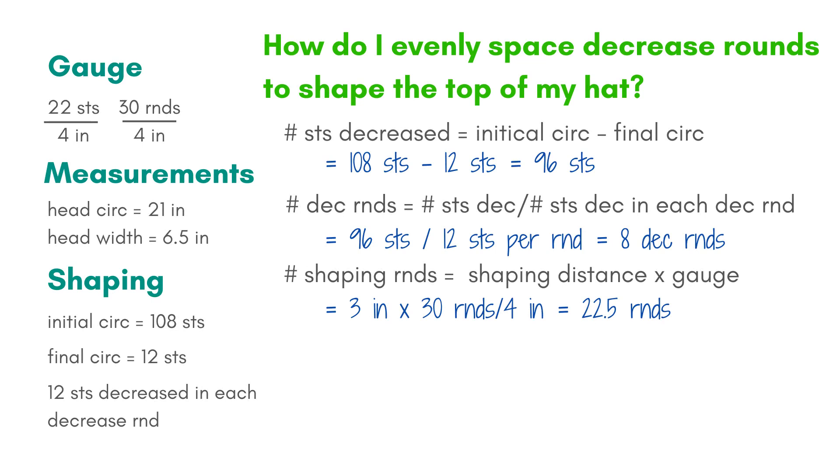3 inches times my gauge, 30 rounds per 4 inches, means I'll be working the shaping over about 22.5 rounds. Of course, I can't actually knit 22.5 rounds. However, for now, let's not worry about that.